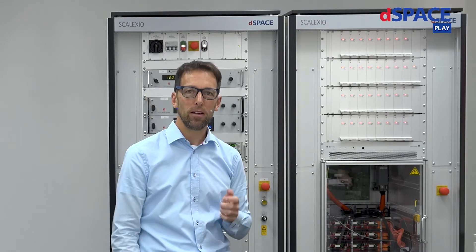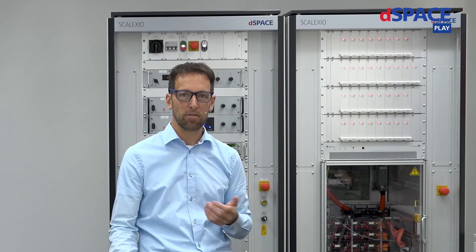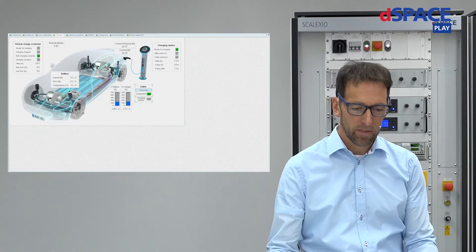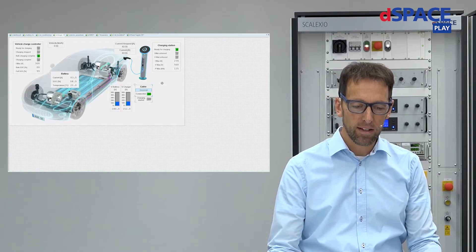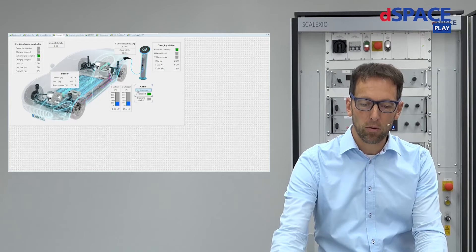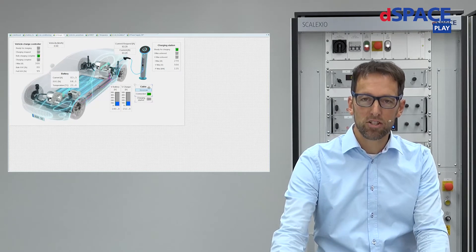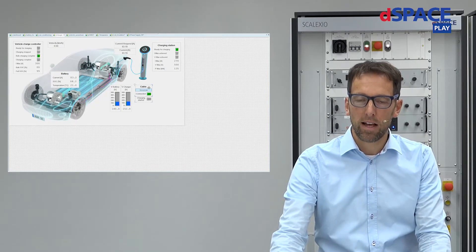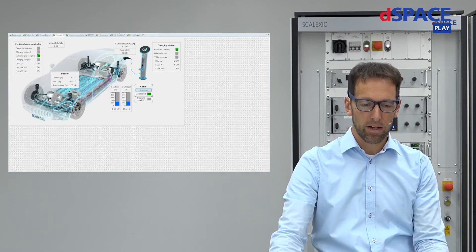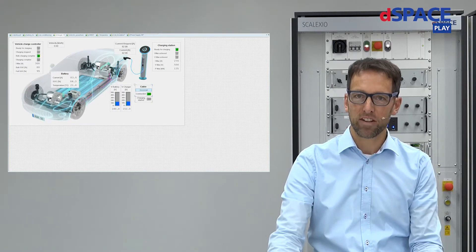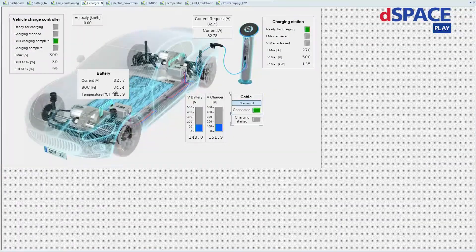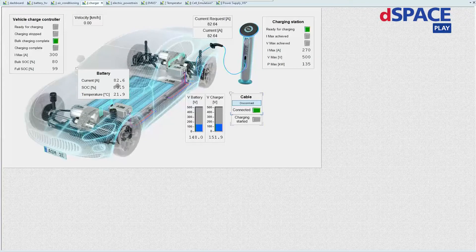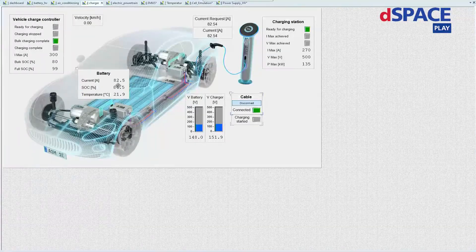Therefore, I think we should switch to control desk and have a look what's happening right now. Okay, here in control desk, as you can see, we have got the situation that a cable, a charging cable is connected. And because of this, I think, yes, we are at a charging station right now. We have got a state of charge of 84% and now we are charging with a current of 82 amps.